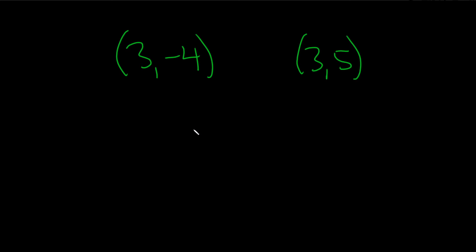In this problem we have two points and they're on a line. We have to find the slope of the line.